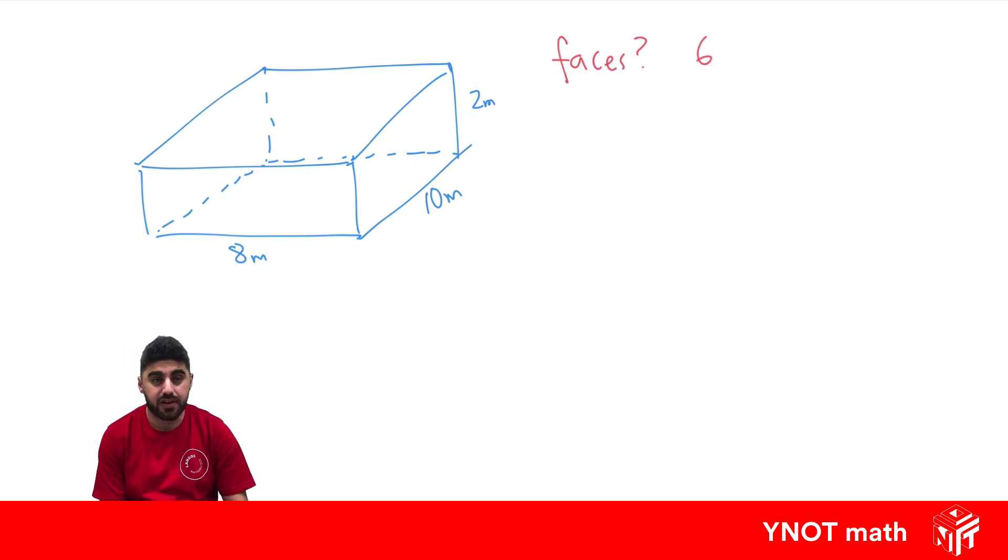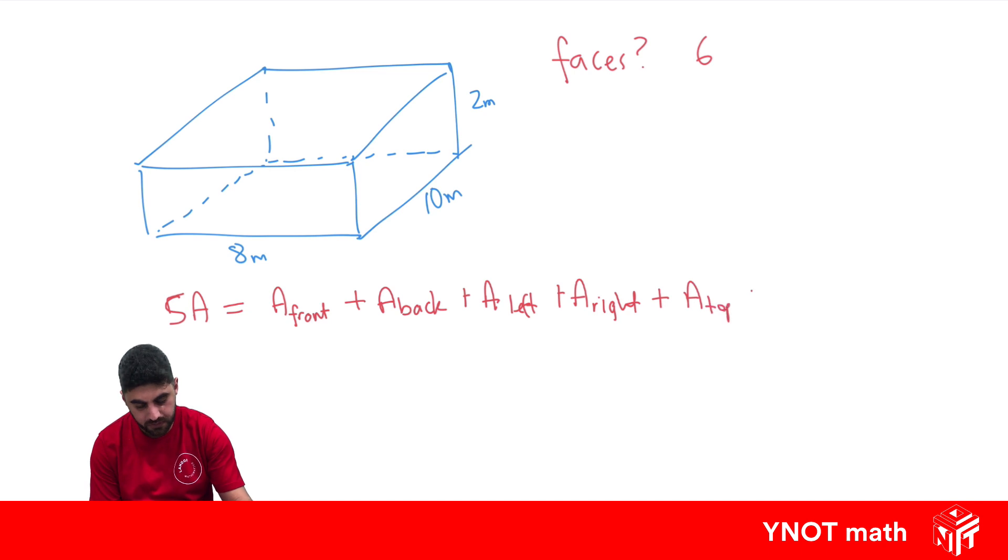So surface area is the area of all of those faces added together. When I do surface area, I like writing it all out. So my surface area is going to be the area of the front, plus the area of the back, plus the area of the left, plus the area of the right, plus the area of the top, plus the area of the bottom. And here we've accounted for all six faces.